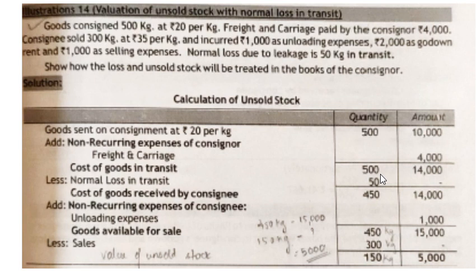Normal loss will reduce only the number of units — it will not affect the cost, because the cost will be adjusted by the consignor in the cost per unit value, which will increase if there is normal loss. It will not reduce the total cost; only the quantity will reduce. So 500 minus 50 gives you 450, and the amount remains 14,000. So the cost of goods received by consignee is 450 kg at rupees 14,000.